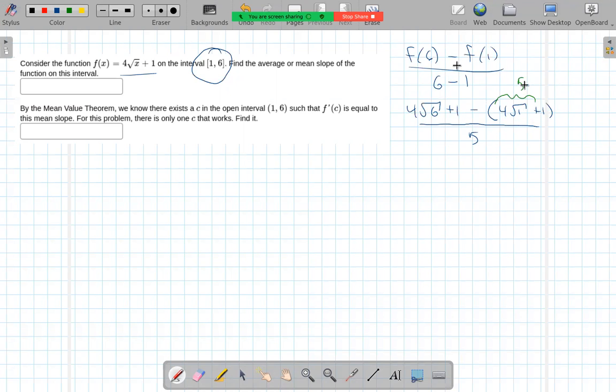And 1 minus 5 is negative 4, so we get 4 square root of 6 minus 4 over 5. So that's the average slope.